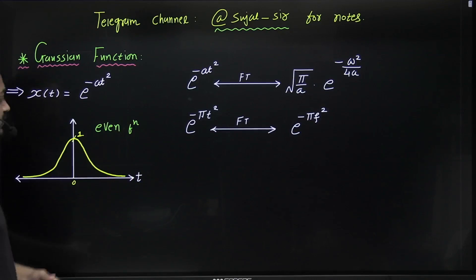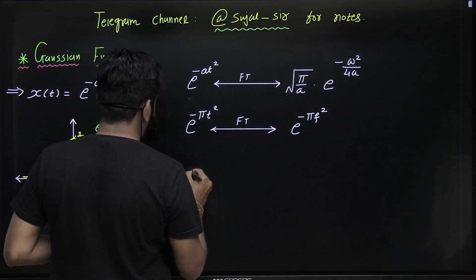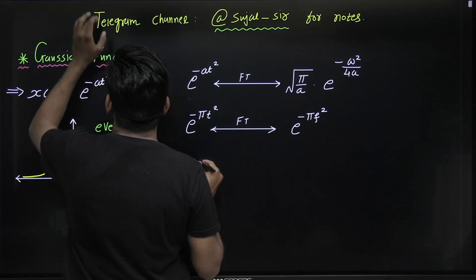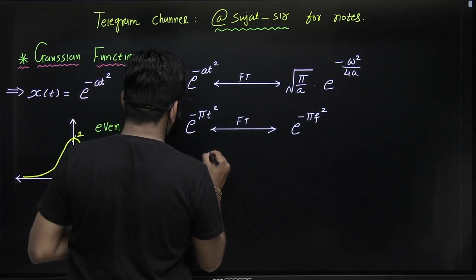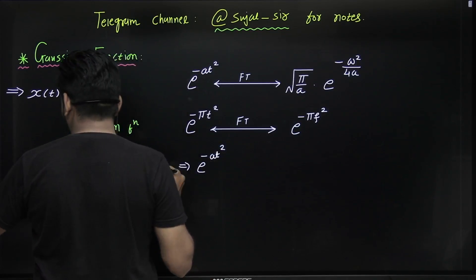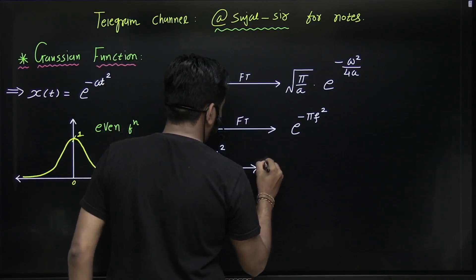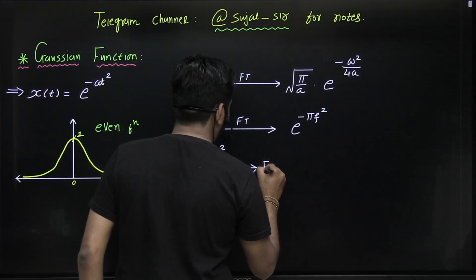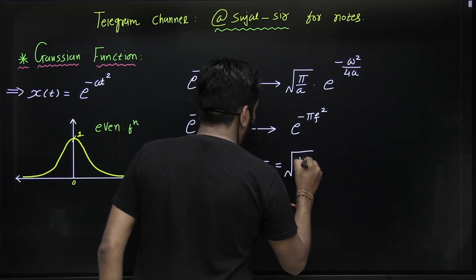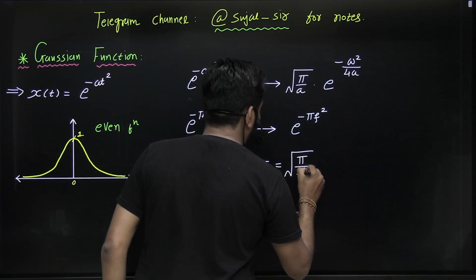Now, what is the energy of this Gaussian function? The energy of the Gaussian function x(t) = e^(-at²) is equal to √(π/2a), where a is a positive real number.